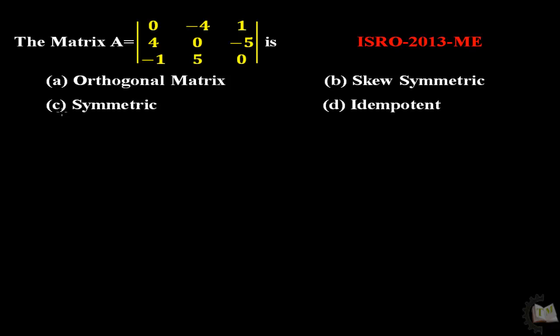First go to the options and find the definition of orthogonal matrix. The orthogonal matrix says that if you take A times its transpose, then you will get I, the identity matrix. Then it is called an orthogonal matrix.